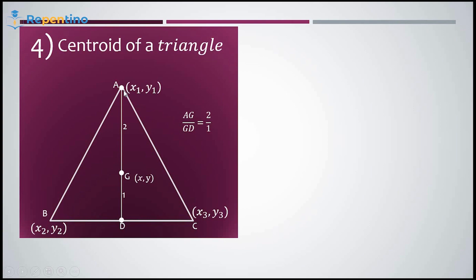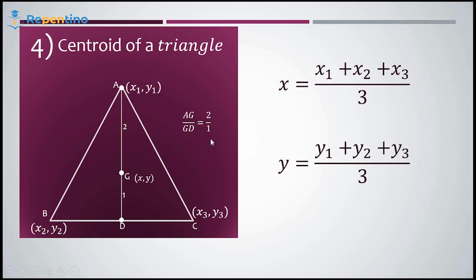Centroid of a triangle: you can see here G is dividing the median AD in the ratio 2 : 1. The centroid divides any median in the ratio 2 : 1. Always note that AG / GD equals 2 : 1. The coordinates of the centroid are x equals (x1 + x2 + x3) / 3, and y equals (y1 + y2 + y3) / 3.